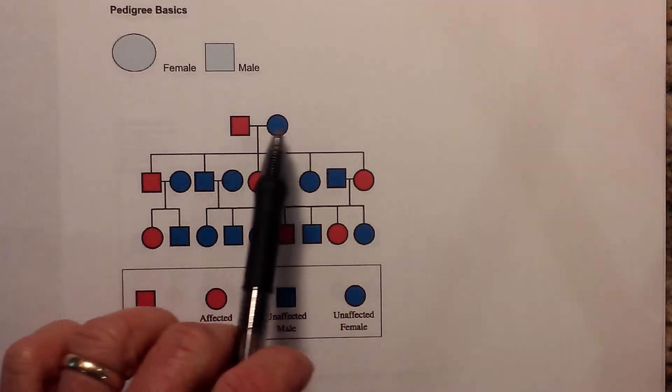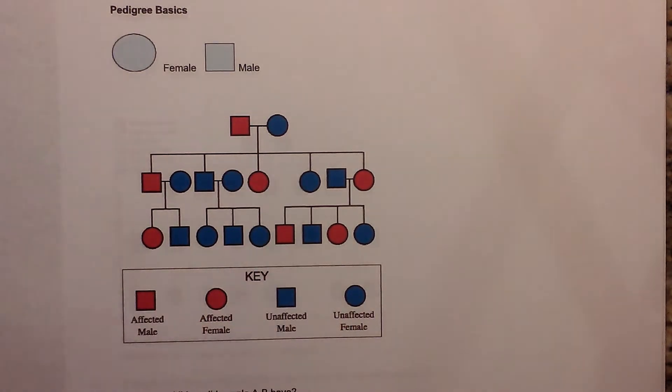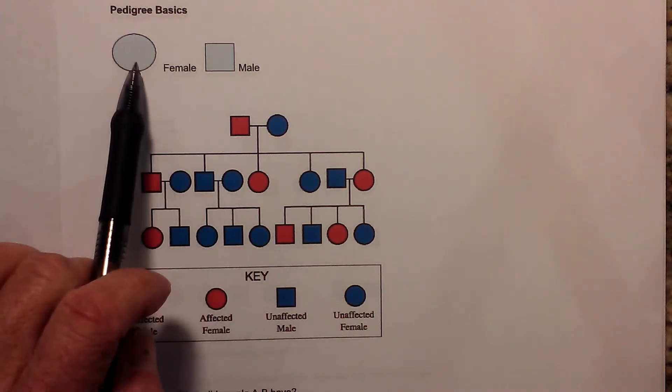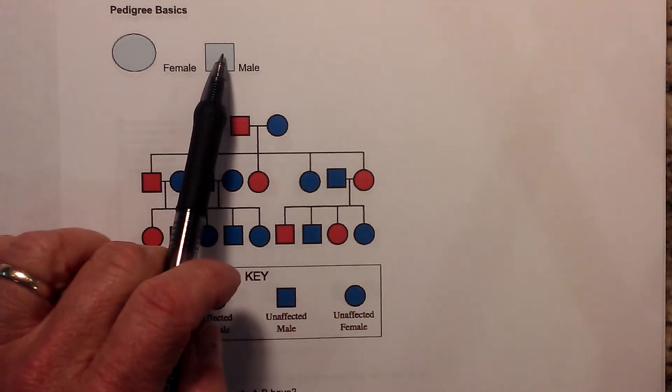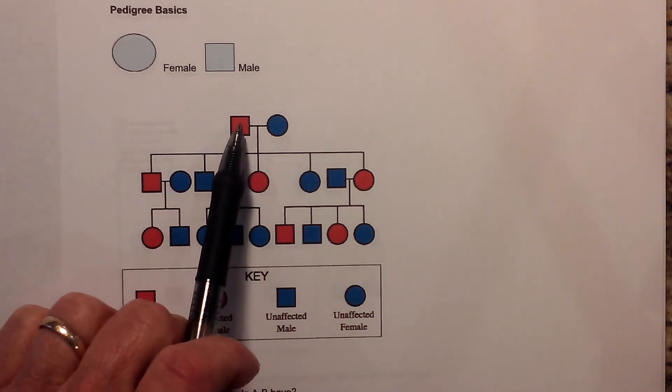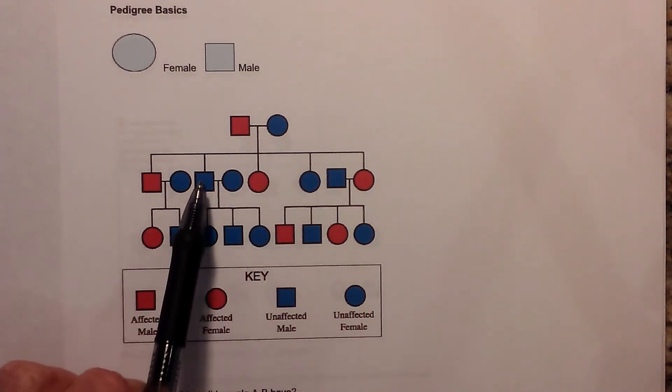First though, what do all these symbols and circles and squares represent? Well let's go through that. First, anytime you see a circle it's a female. Anytime you see a square it's a male. So this would be a male, this would be a female.